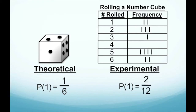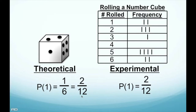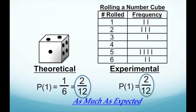To compare, we need the same denominator. Rather than reducing two twelfths, let's convert one sixth to two out of twelve. Theoretically, we expected to roll a one twice out of twelve. And in our experiment, we actually landed on one twice. So we got as much as we expected — theoretical probability equals two twelfths, experimental probability equals two twelfths.